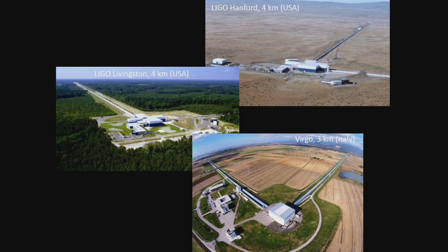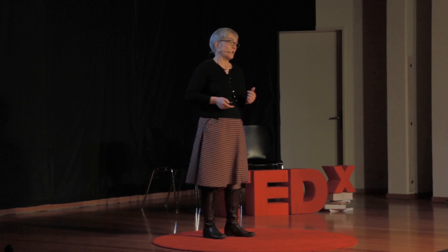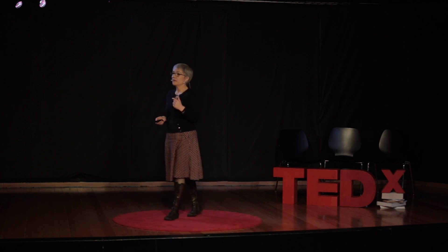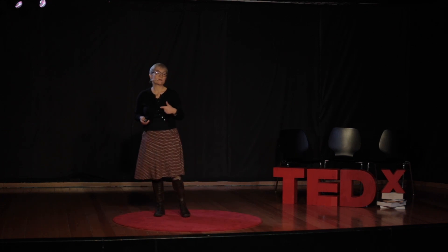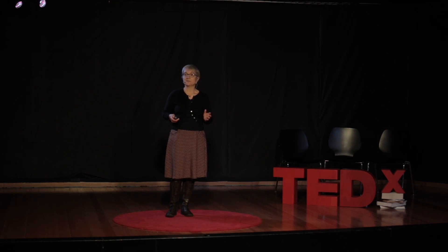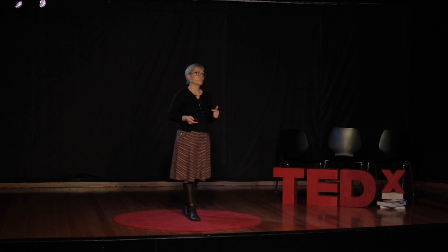There are three such detectors — we call them interferometers — around the world: the two LIGO detectors in the US, and the Virgo detector in Europe. Virgo and LIGO operate together, forming a network of detectors and a big collaboration of more than a thousand people. We started building LIGO and Virgo about 25 years ago and kept improving them until finally, on September 14, 2015, the first gravitational wave signal was detected by the two LIGO detectors.